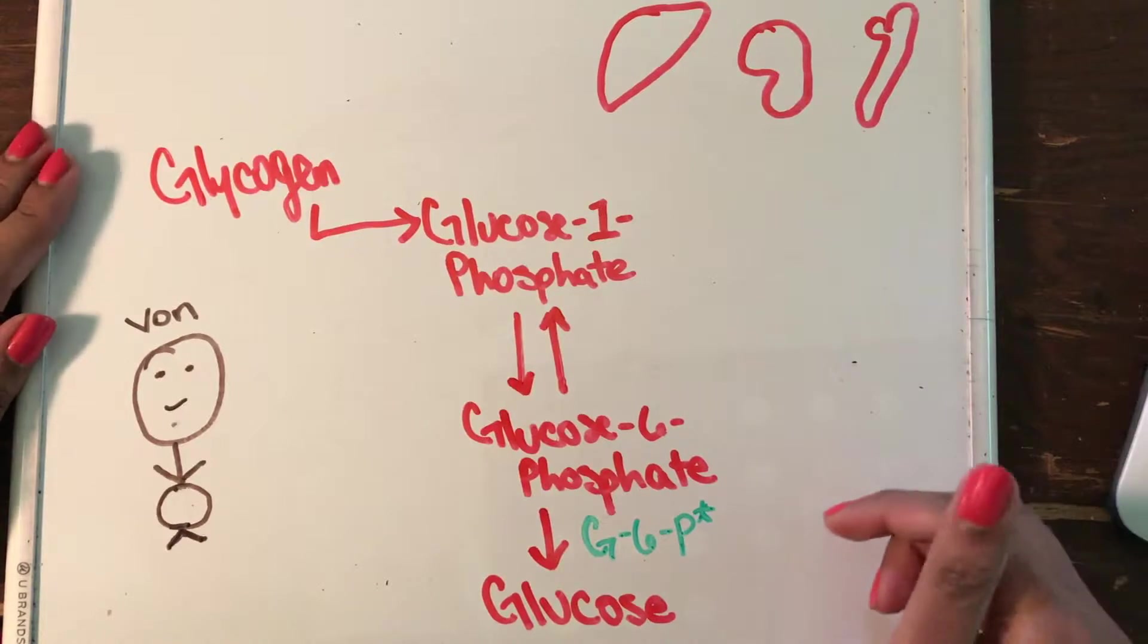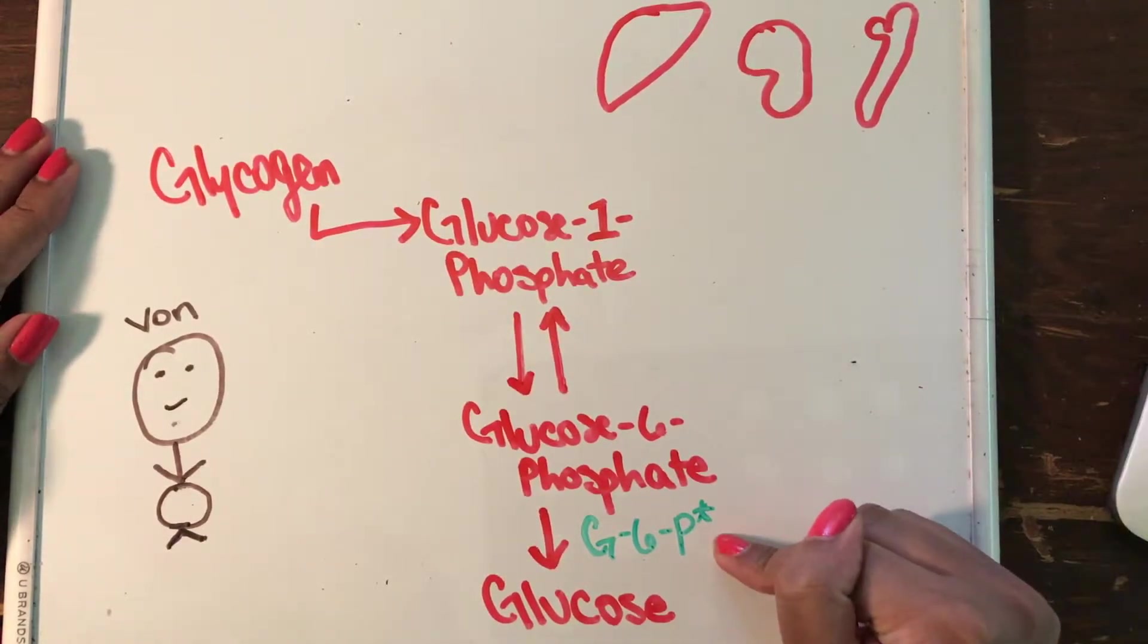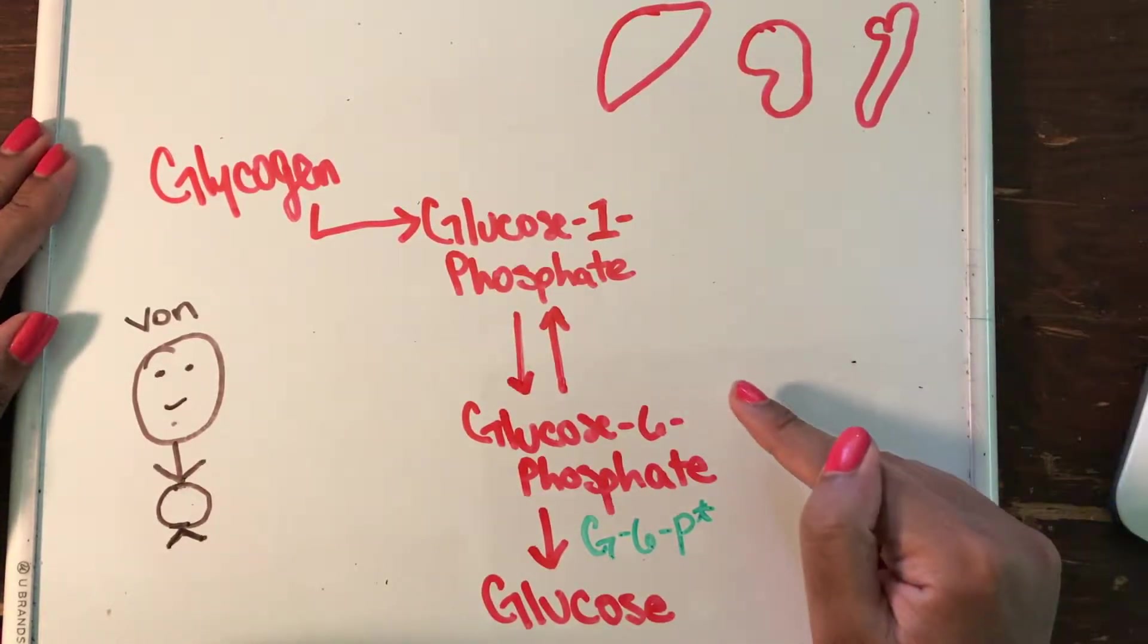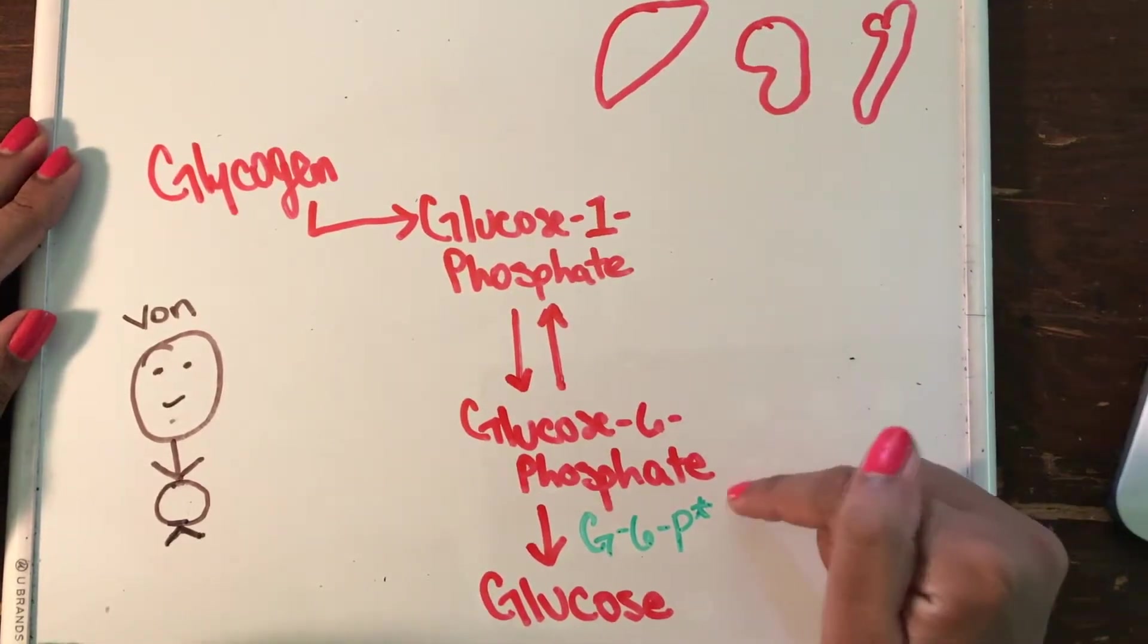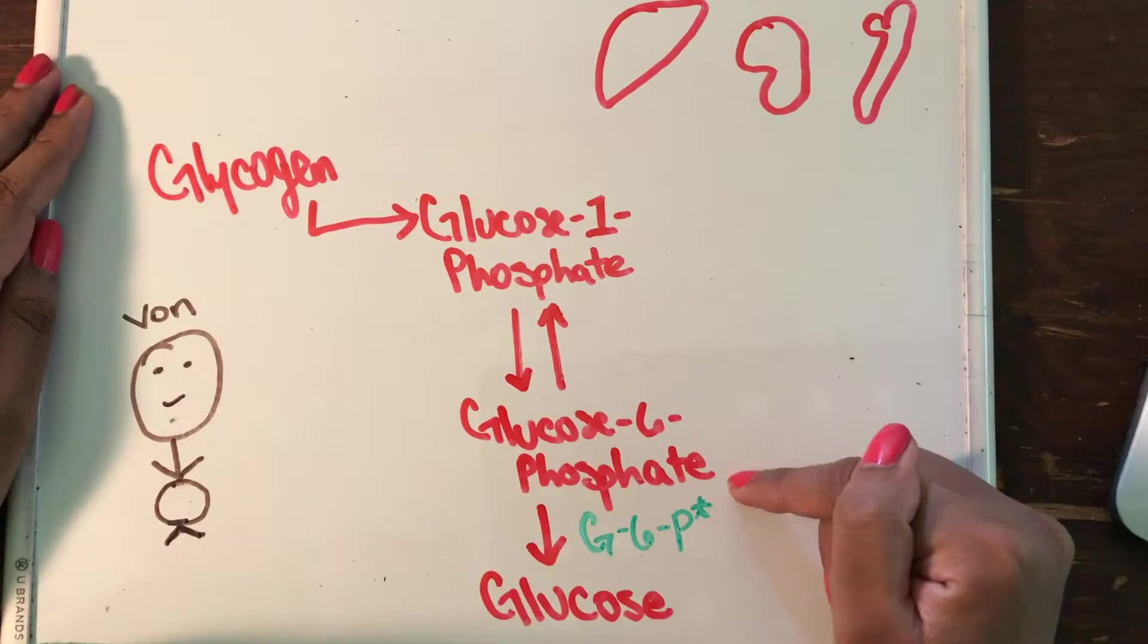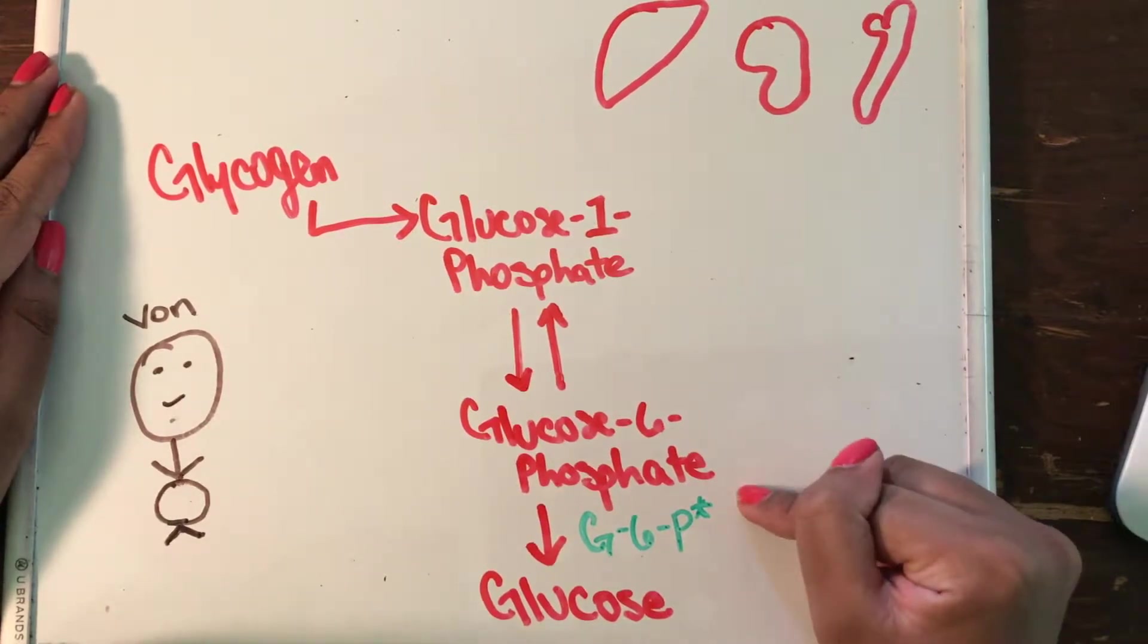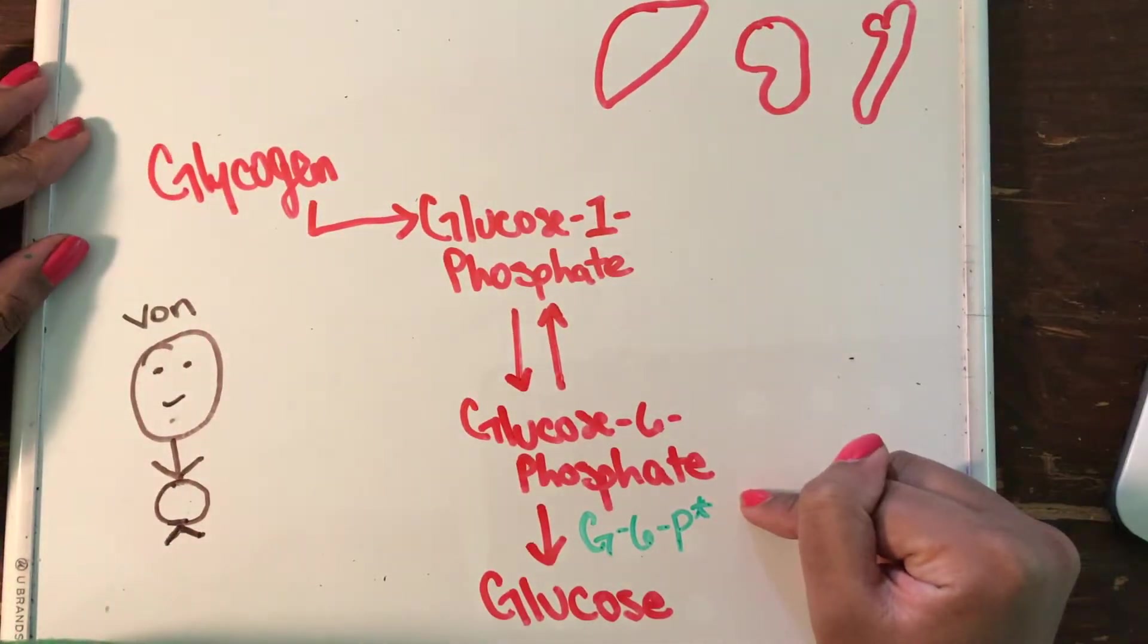So basically, in G6PD deficiency, you have a deficiency in glucose 6-phosphatase, which is the enzyme that converts glucose 6-phosphate into glucose. And why this is so important is because this is the last step in gluconeogenesis, as well as it's an irreversible step.